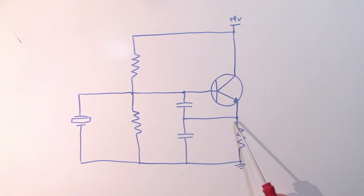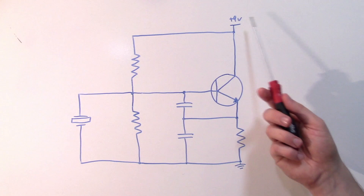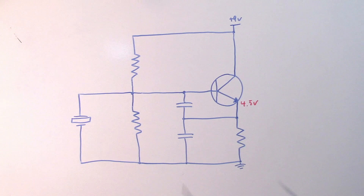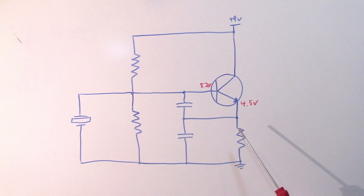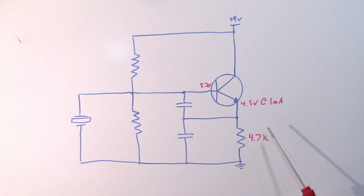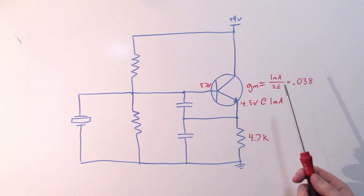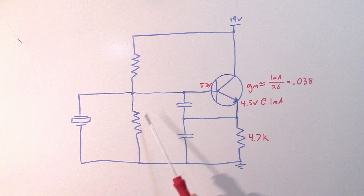I'll put the emitter voltage at about 4.5 volts, which means the base bias needs to be about 5.1–5.2 volts. Setting emitter current at 1 milliamp initially — a good starting point — means I need an emitter resistor of about 4.7 kΩ. That also determines my transconductance: at room temperature, GM for a BJT is approximately emitter current divided by 26 mV, so 1 mA / 26 mV = 0.038 siemens.